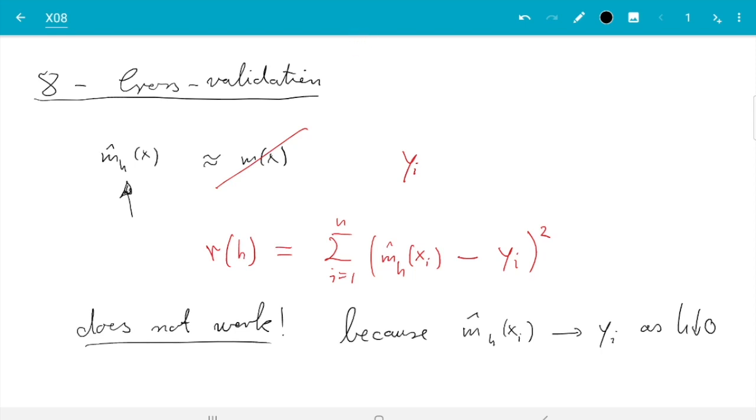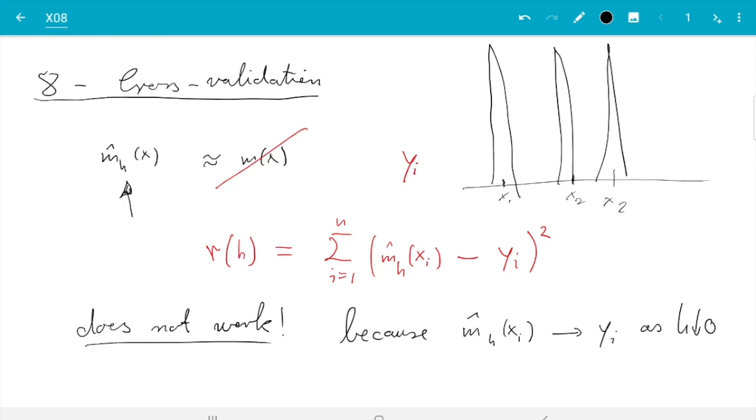For kernel regression or these non-parametric models this method does not work. The reason is that m̂ₕ converges to yᵢ if h goes to 0. h is the size of the neighborhood we are using for averaging. If that goes to 0, we only see points very close, and in the limit we just see the sample at xᵢ, so the average will only include yᵢ.